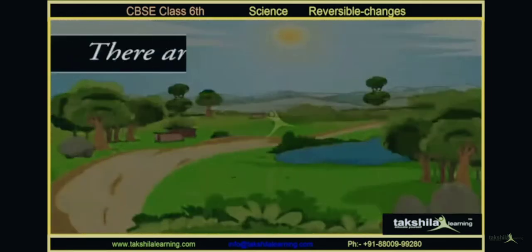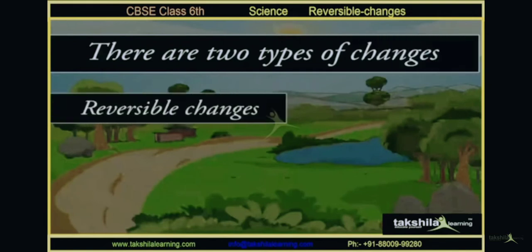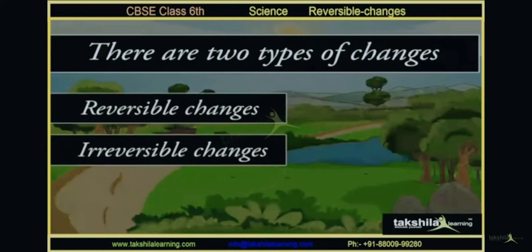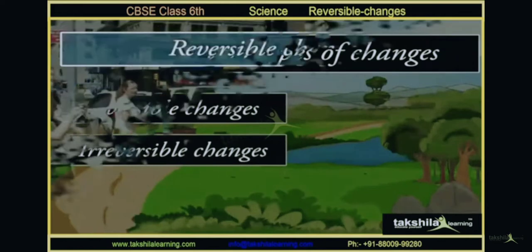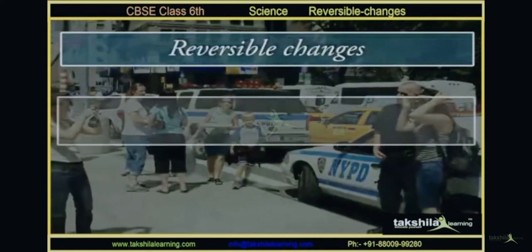The appearing and rising of the sun, and sunset — these are all changes. There are two types of changes: reversible change and irreversible change.